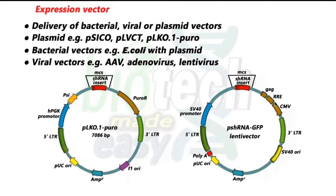Both vectors have multiple cloning sites, written in the figure as MCS — multiple cloning sites. This is the segment having many restriction sites for insertion of foreign DNA, and here the shRNA is inserted using one of the suitable restriction sites.